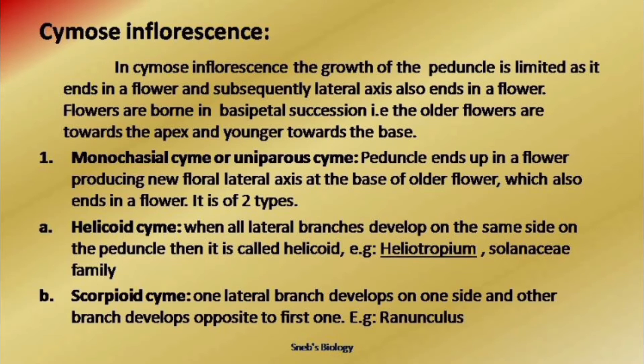The first type is known as uniparous cyme, also called monochasial cyme. In uniparous cyme, every time only one branch will be produced. This is further divided into two categories: helicoid cyme and scorpioid cyme.